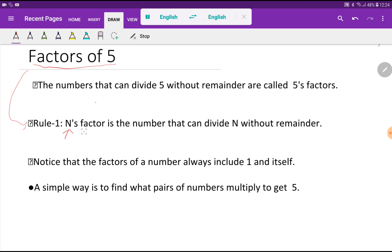Here n is a number. N's factor is the number that can divide n without remainder. So what do we mean by the factors of 5? The numbers that can divide 5 without remainder are called 5's factors.